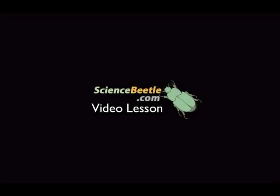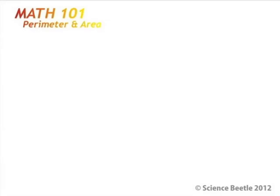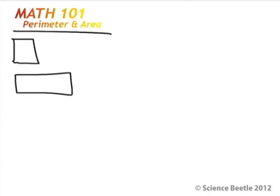Welcome back to Math 101. In this lesson we're going to focus on trying to figure out the perimeter, area, and circumference of various geometric forms. The geometric forms that we want to look at today are going to be the square, the rectangle, the triangle, and the circle.